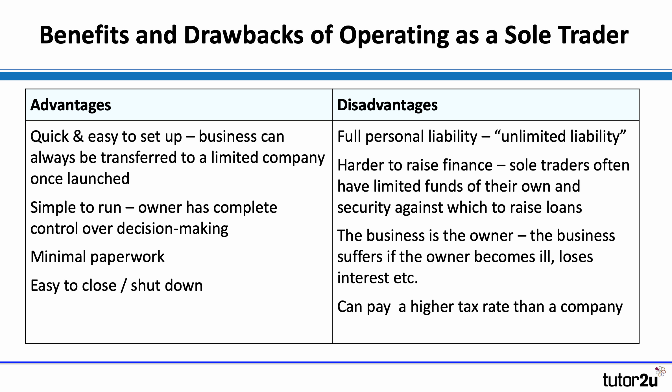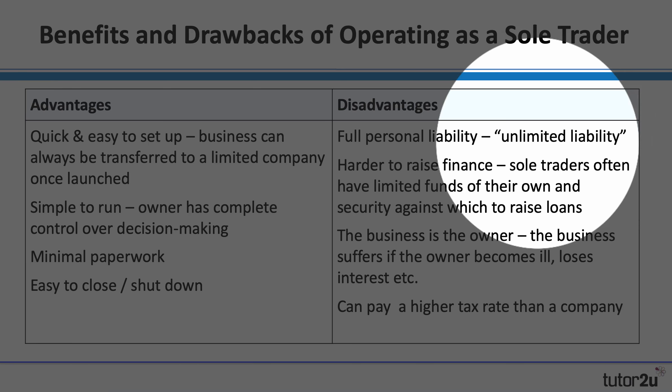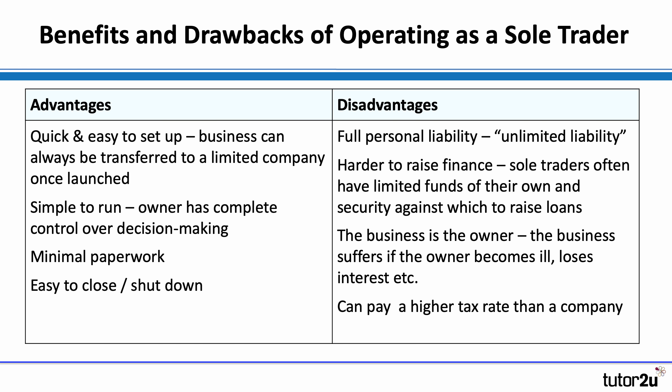In terms of benefits and drawbacks: it's really easy to set up as a sole trader, easy to close it, and the paperwork is fairly minimal — very informal. The big downside is unlimited liability; as a sole trader you are responsible for the debts of your business. Other downsides include it being harder to raise finance, and if the owner becomes ill or loses interest, the business suffers, because the business and the owner are one and the same thing.